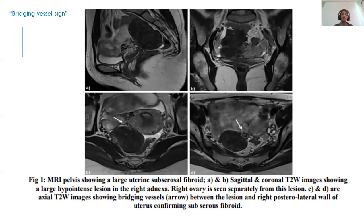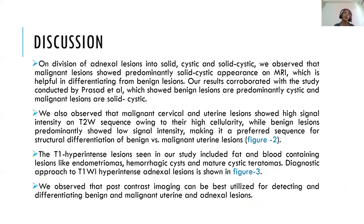In figure 1, we can see MRI pelvis showing a large uterine sub-serous fibroid in axial and coronal T2-weighted images with a large hypointense lesion in the right adnexa. The right ovary is seen separately from this lesion, and in images C and D, axial T2-weighted images show bridging vessels indicated by the white arrow between the lesion and the right posterolateral wall of the uterus, confirming the finding of a sub-serous fibroid. On division of adnexal lesions into solid, cystic, and solid-cystic, malignant lesions showed predominantly solid-cystic appearance on MRI, corroborating Prasad et al., which was helpful in differentiating from benign lesions.